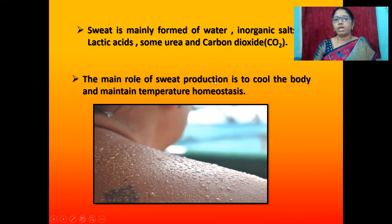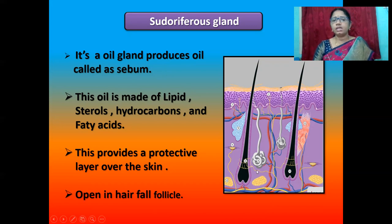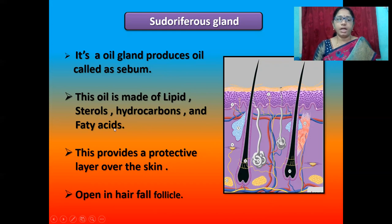The main role of sweat production is to cool the body and maintain temperature homeostasis. The next gland is the sebaceous gland. It is an oil gland that produces oil called sebum. This oil is made of lipids, sterols, hydrocarbons and fatty acids. It provides a protective layer over the skin and opens into the hair follicle.